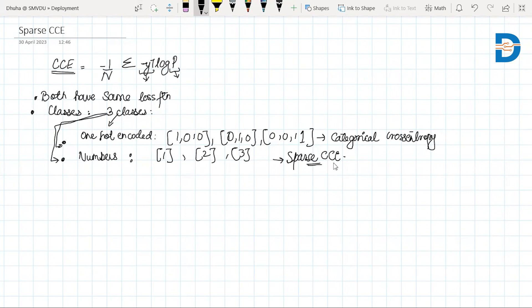So sparse categorical cross-entropy is only different in terms of the representation of your classes. Is it in the form of some vectors like this or is it simple numbers?